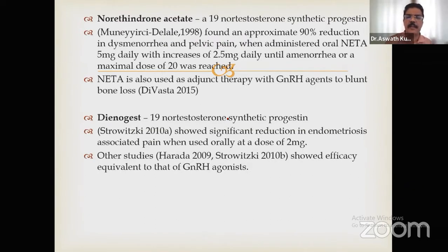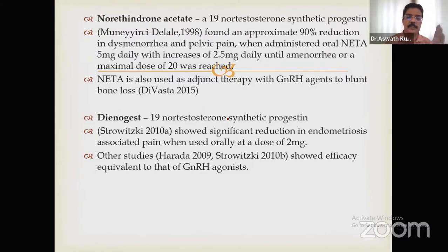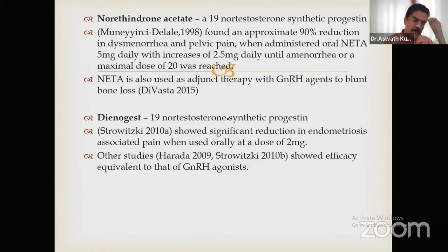Norethisterone or norethisterone acetate can achieve up to 90 percent pain reduction. The starting dose is 5 mg daily, but that may not be enough — you gradually increase by 2.5 mg daily until amenorrhea is attained. The maximum tolerable dose is around 20 mg, and tolerability can be difficult. It is very effective as adjunct therapy with GnRH agonists to prevent bone mineral density loss.